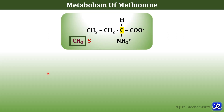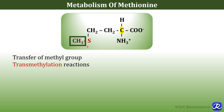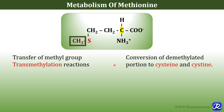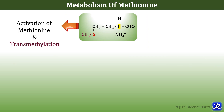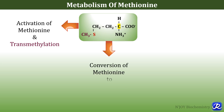Now let's learn about the metabolism of methionine. This is the structure of methionine — sulfur is present and a methyl group is attached to the sulfur, and the special group in methionine is the thioether group. The methyl group is involved in transmethylation reactions. Metabolism of methionine can be learned under three subheadings: activation of methionine and transmethylation; conversion of methionine to cysteine and cystine; and degradation of cysteine.